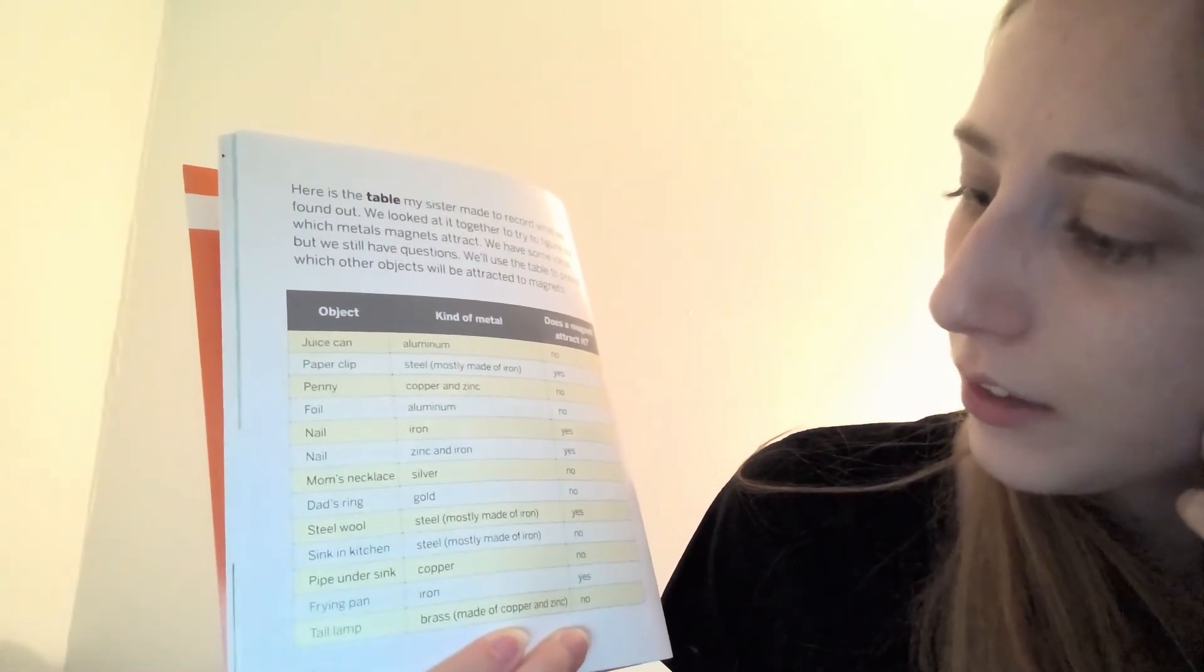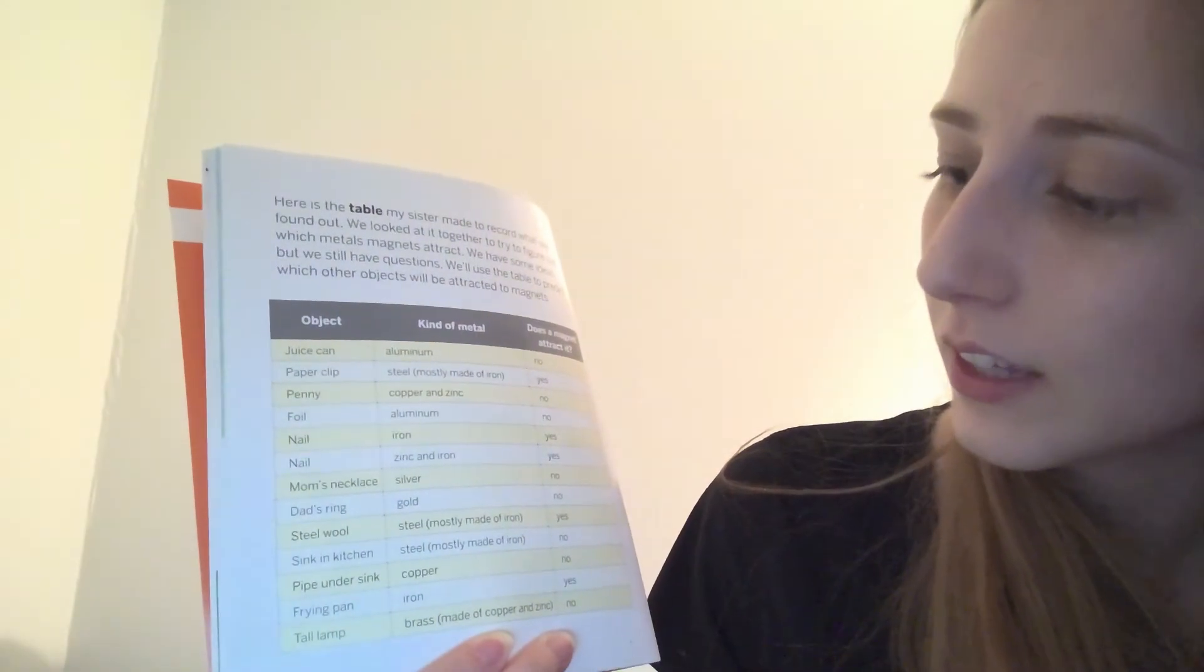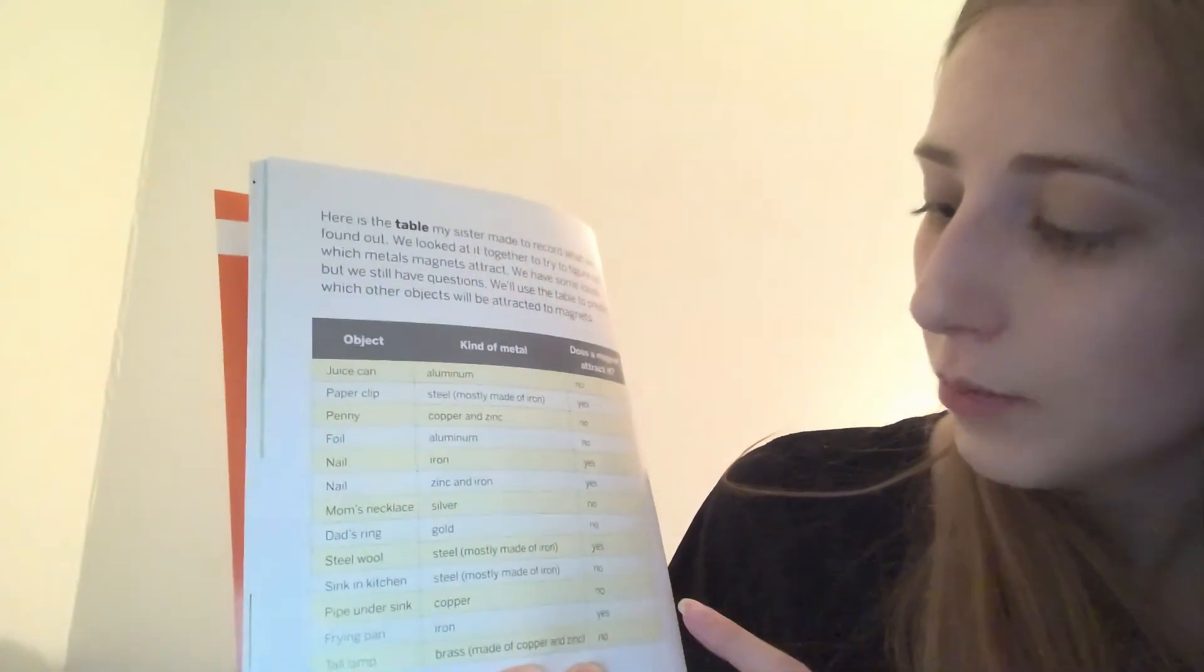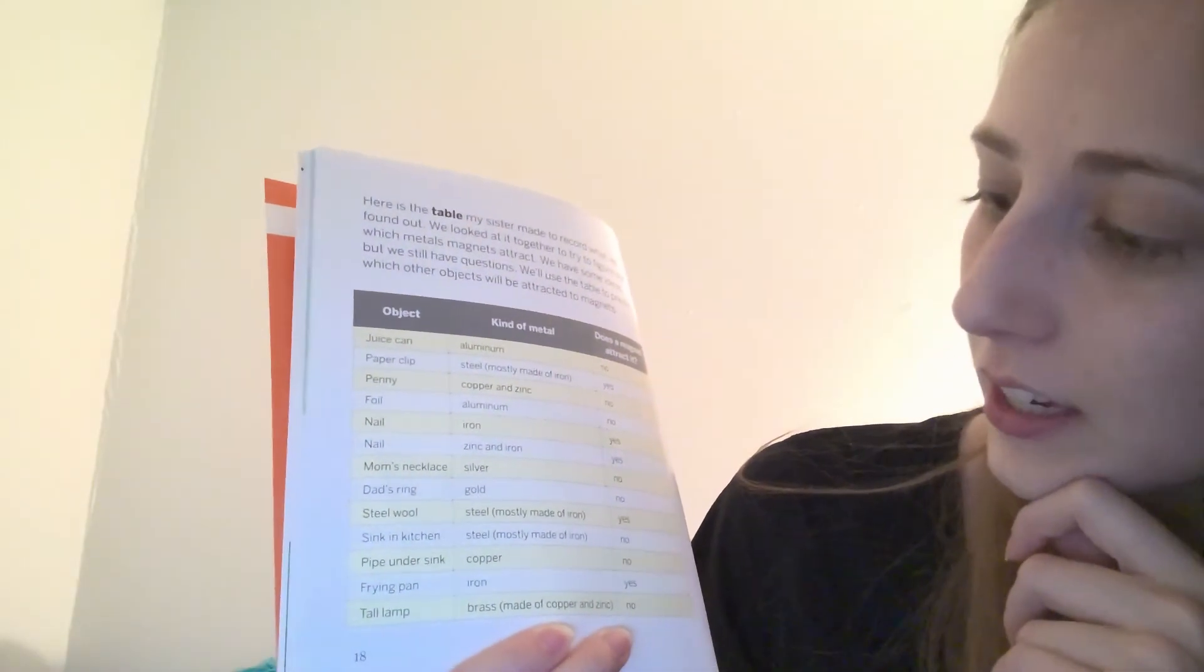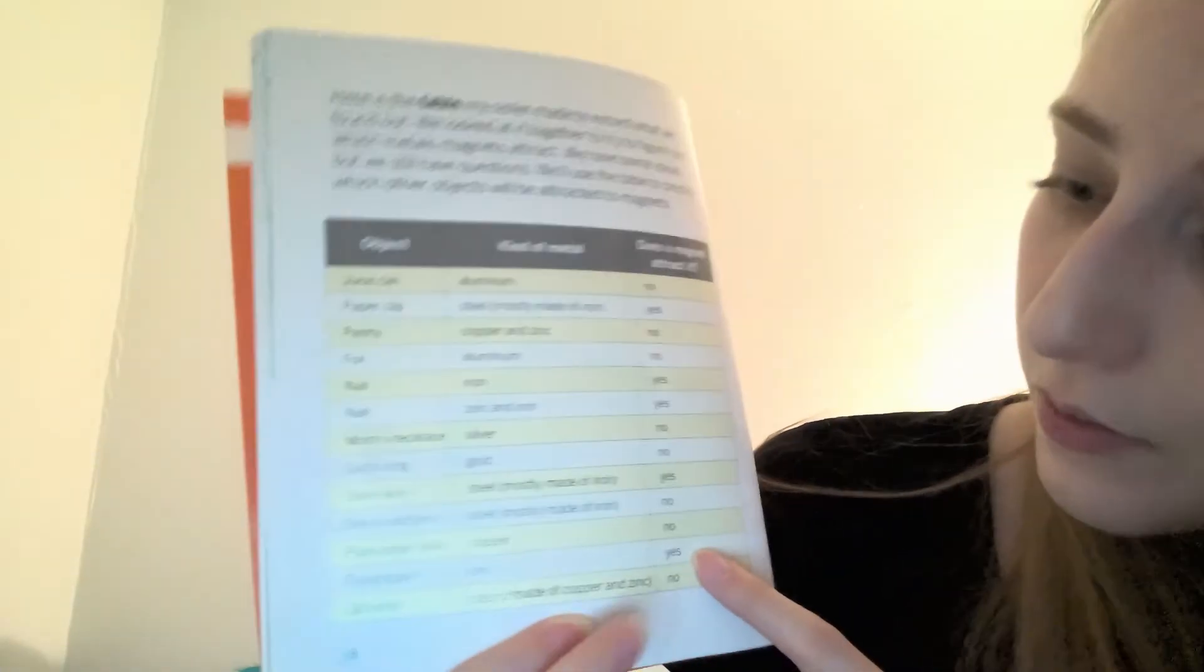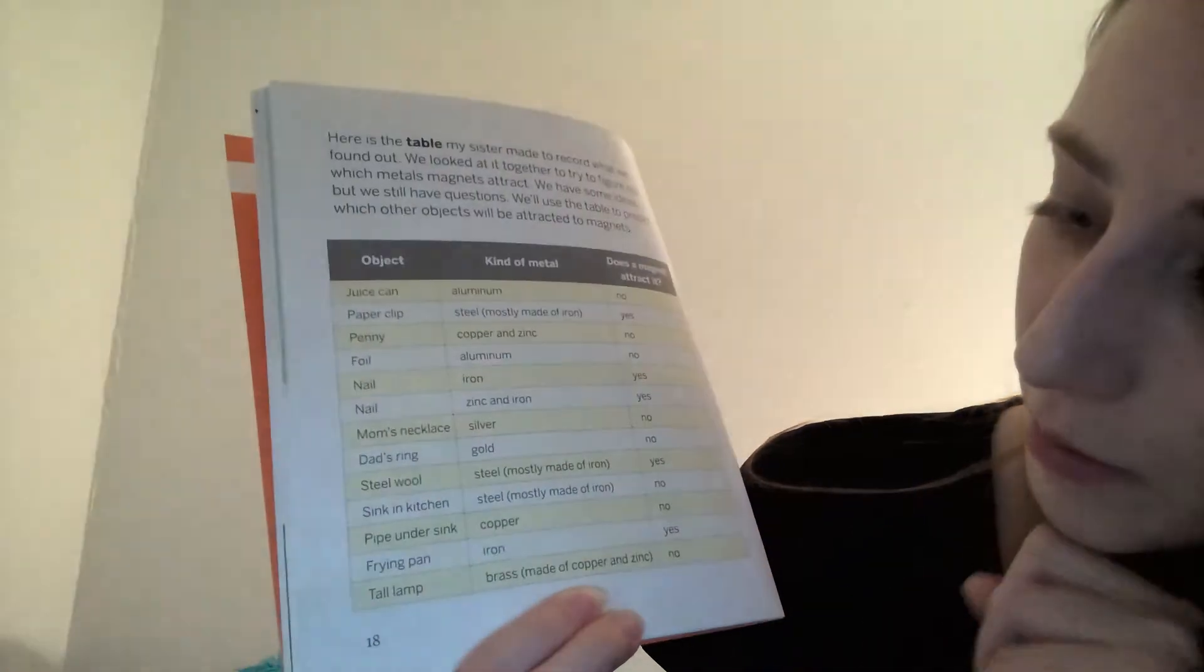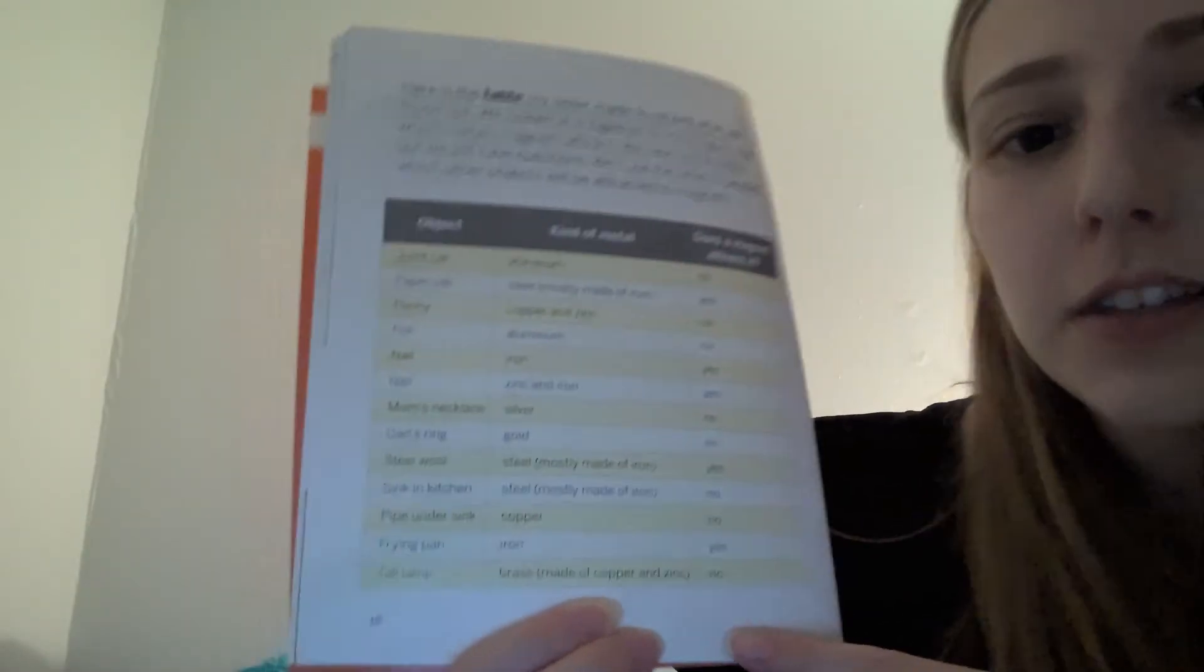Steel wool is made of steel, which is mostly made of iron. It does attract. A sink in the kitchen is made of steel, mostly made of iron. It does not attract. The pipe under the sink is made of copper, and it does not attract. The frying pan is made of iron, and it does attract. And the tall lamp is made of brass, which is mostly made of copper and zinc, and it does not attract.